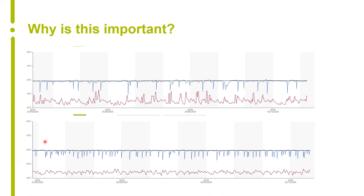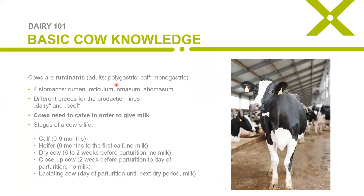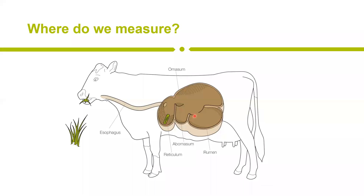On the question of whether the averages are computed block-wise or on rolling windows: the activity signal is in 10-minute blocks — it's the sum of 10 minutes. On how the sensor stays in the cow: because of the weight of the sensor it just sinks down and stays there. Sometimes in the beginning it moves to a different place within the rumen, but it basically stays in position because of the size and weight of the sensor.